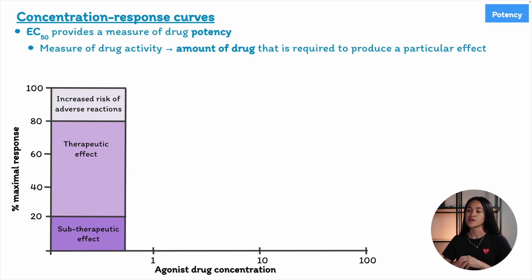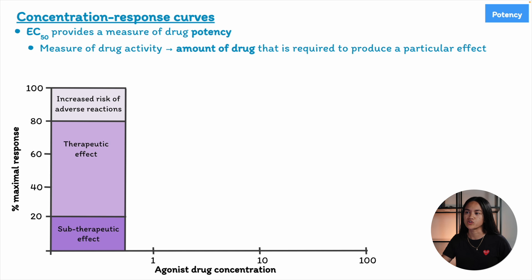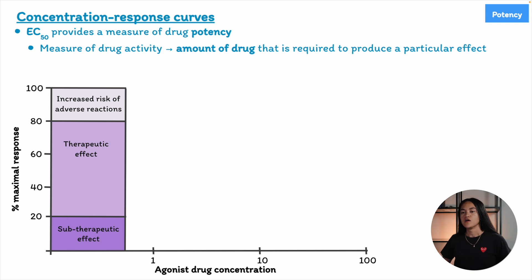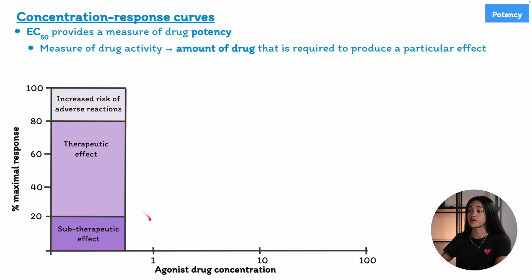In a CRC, the drug concentration is plotted on the x-axis and the response on the y-axis. As concentration increases, the response also increases, and the resulting graph is typically sigmoidal. The linear portion of the curve occurs between 20 and 80% of the maximum response — this is the therapeutic range where the drug produces the desired effect. Below this range is the sub-therapeutic area where the drug's effect is too weak.